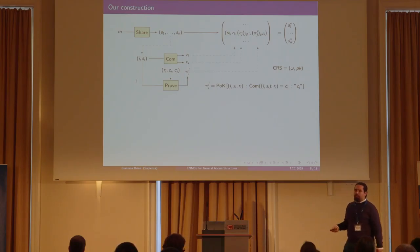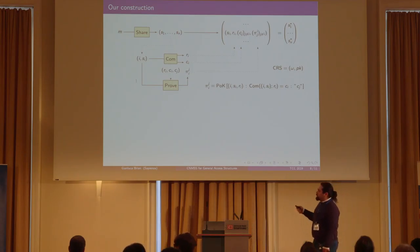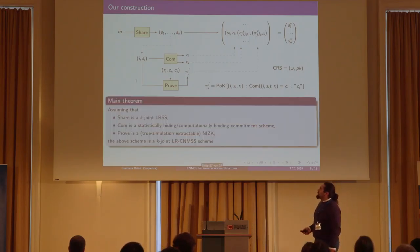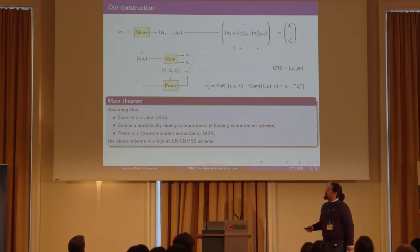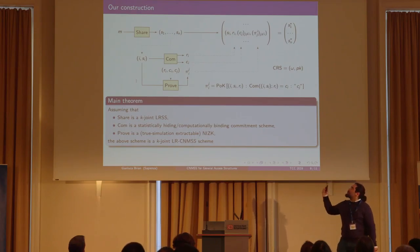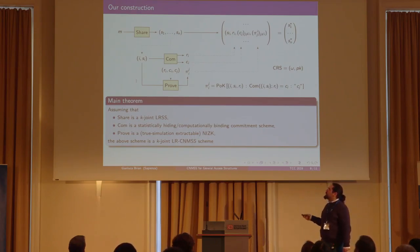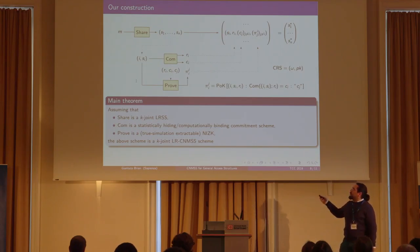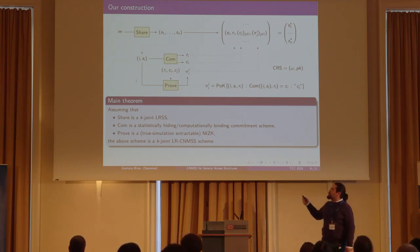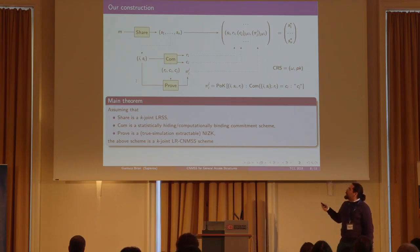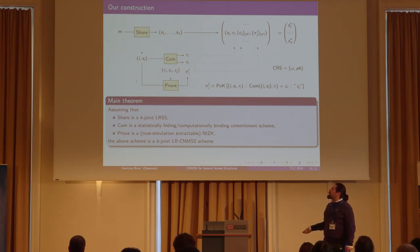We compute the proof PI_j that commitment C_i is a commitment of the pair (i, S_i) using label C_j. We again use a zero-knowledge proof system supporting labels. Our main theorem states: assuming Share is a K-joint leakage-resilient secret sharing scheme, COM is a statistically hiding and computationally binding commitment scheme, and Prove is a true simulation-extractable NIZK, then the above scheme is a K-joint leakage-resilient continuous non-malleable secret sharing scheme.